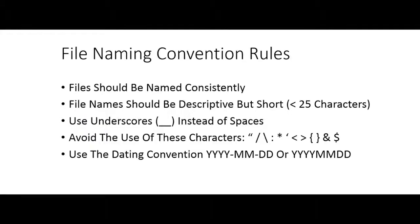Once you come up with your three things, put them into a template for your file name. There are a couple of recommendations. First, you want it to be clear but short — try to stick to templates under 25 characters in length, because otherwise they get unwieldy and hard to work with. Second, avoid special characters in your file names. Punctuation shouldn't go in file names because computers have a hard time with those. This includes spaces — some operating systems like Linux don't deal well with spaces. Use dashes and underscores instead.